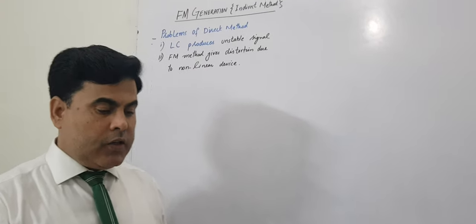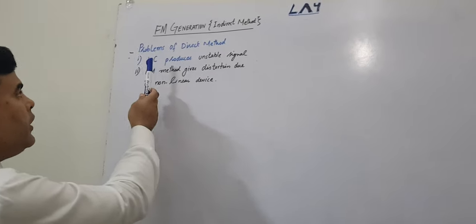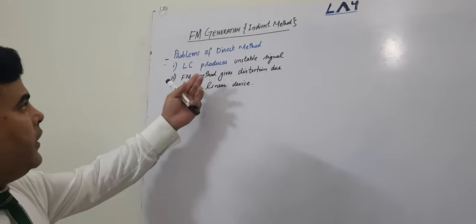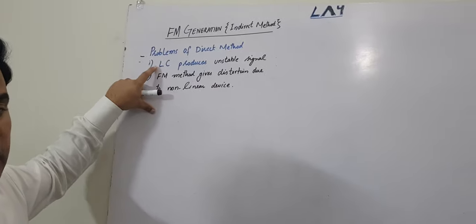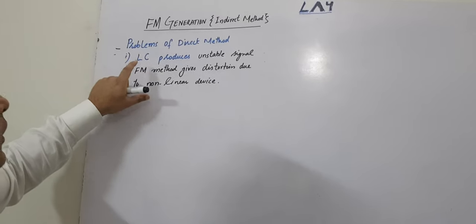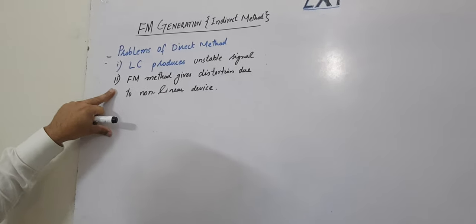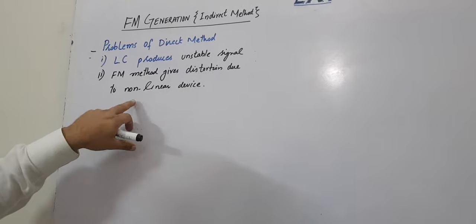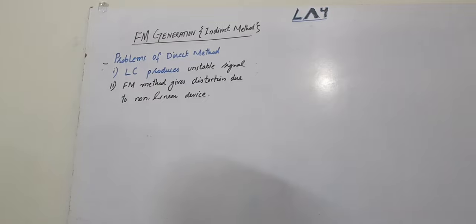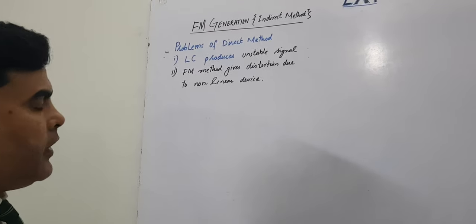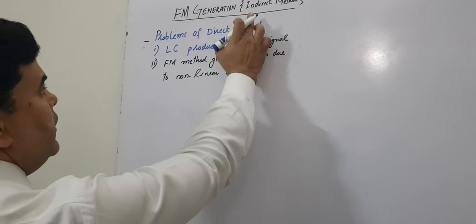Today we will discuss FM generation using the indirect method. There are problems with generating FM using the direct method. First, the LC circuit produces an unstable signal. Second, the direct FM method gives distortion due to the nonlinear device. The third approach uses crystal oscillators, but crystal oscillators have the limitation that they cannot produce more than 1 MHz. That is why we have to use indirect methods.